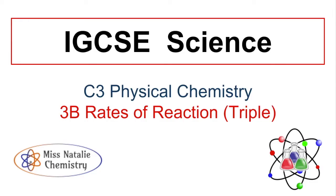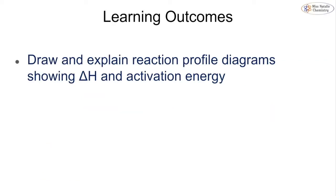This video covers the triple outcomes only for the 3B rates of reaction topic in IGCSE chemistry. The learning outcome for this particular topic is simply to draw and explain reaction profile diagrams, being able to show both delta H and your activation energy.